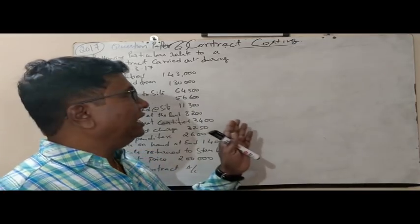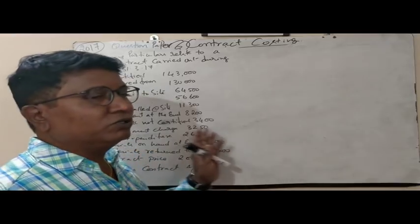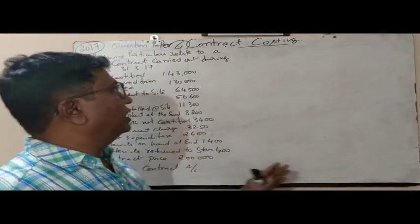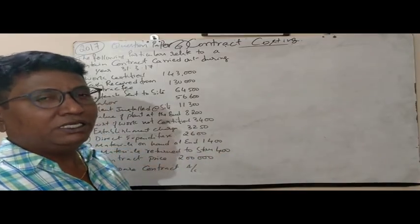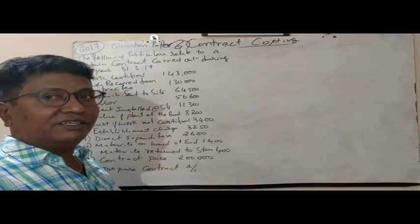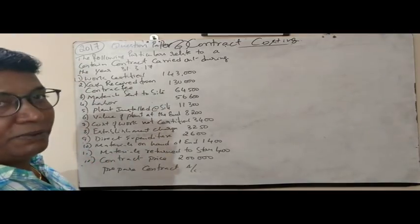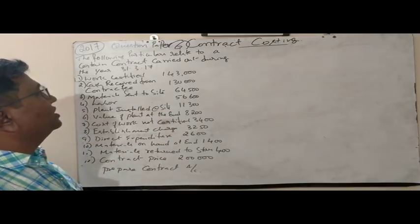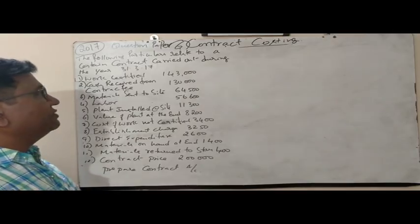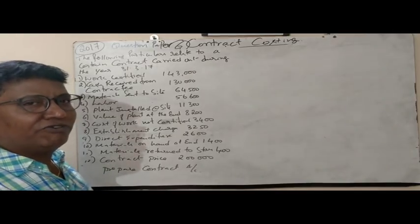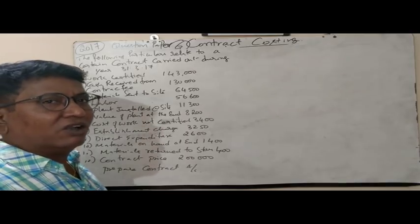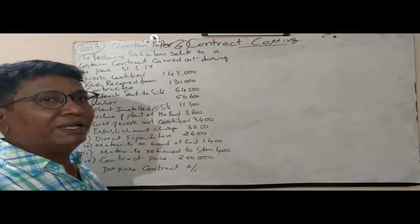I will be solving 3 years' question papers, that is from 2017, 2016, and 2015. First we will take the 2017 question paper. I have extracted the question here. The following particulars relate to a certain contract carried out during the year ending 31st March 2017. What is given is work certified. Work certified is the certificate issued by the architect for the work completed by the contractor.